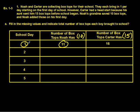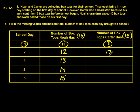One plus 10 gives us 11, and one plus 15 gives us 16. To finish up the columns we have 12, 13, 14, 15 for Noah, and 17, 18, 19, 20 for Carter.